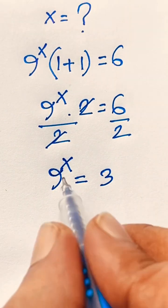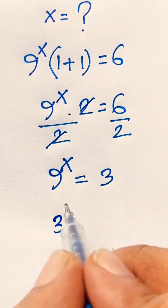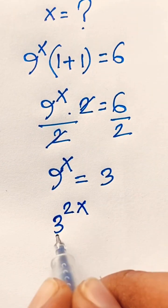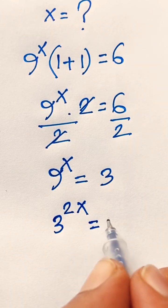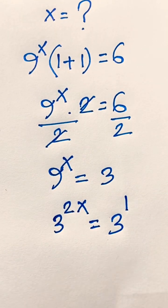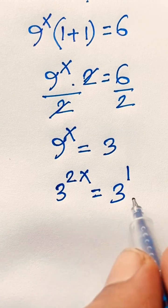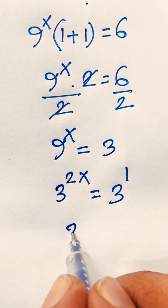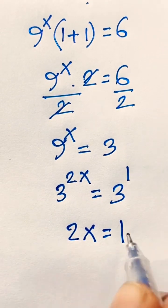Now, 9 to the power x can be written as 3 to the power 2x, since 3 squared equals 9. And here 3 equals 3 to the power 1. According to exponential law, when the bases are the same, the exponents must be equal, so 2x equals 1.